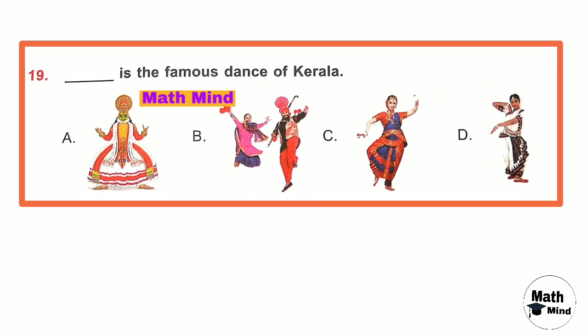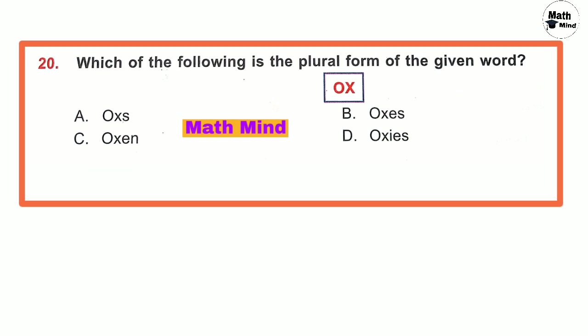Question number 19: Dash is the famous dance of Kerala. Option A is correct — this is Kathakali, the famous dance form of Kerala. Question number 20: Which of the following is the plural form of the given word? The word is 'ox' — its plural form is 'oxen'.